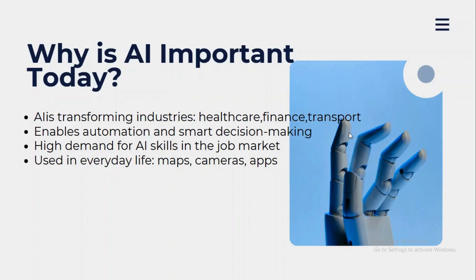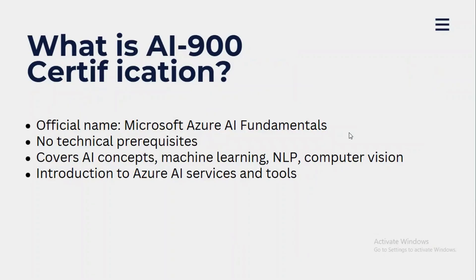If you want to learn AI more in depth without coding or a technical background, you can start with the AI-900 certification. This certification will build a foundation for you so you understand what AI is, what the different types of AI are, and what AI services are provided by Azure. Its official name is Microsoft Azure AI Fundamentals, and you don't need any technical background to begin. This course is suitable for both non-technical and technical learners.